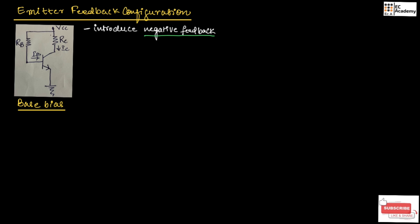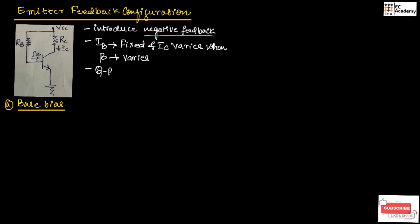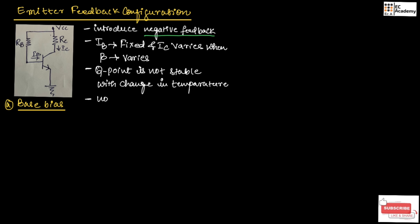There are two basic types of emitter feedback configuration. The first one is base bias. Figure A shows the base bias configuration. In base bias configuration, the current IB is fixed and the current IC varies or changes when the current gain varies. Hence, the Q point is not stable and it moves all over the load line with change in temperature. Hence, this type of biasing is not commonly used.